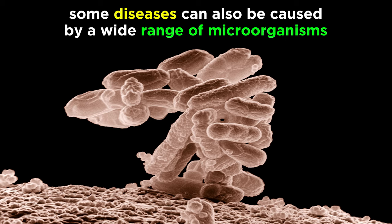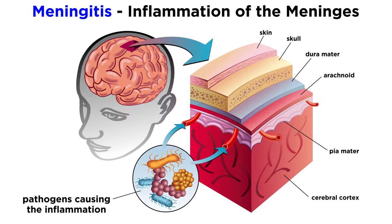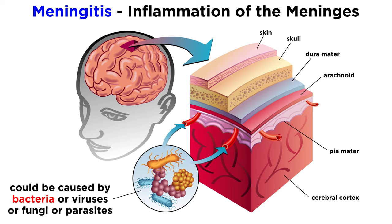In that same vein, some diseases can be caused by a wide range of organisms. Interestingly, meningitis — which is an inflammation of the protective membranes covering the brain and spinal cord — can be caused by bacteria, viruses, fungi, or parasites.